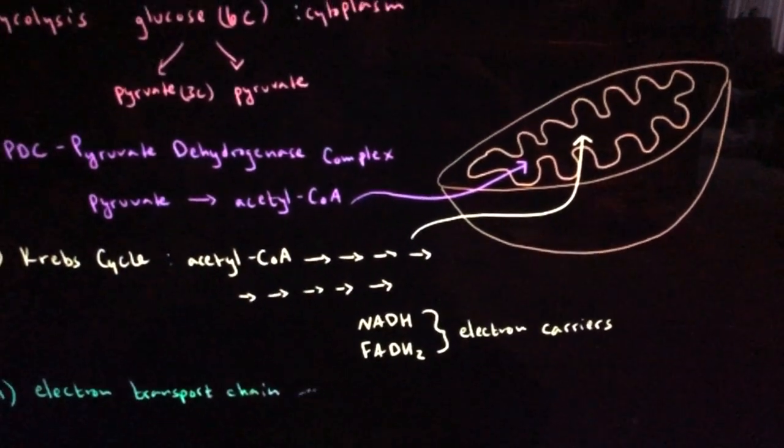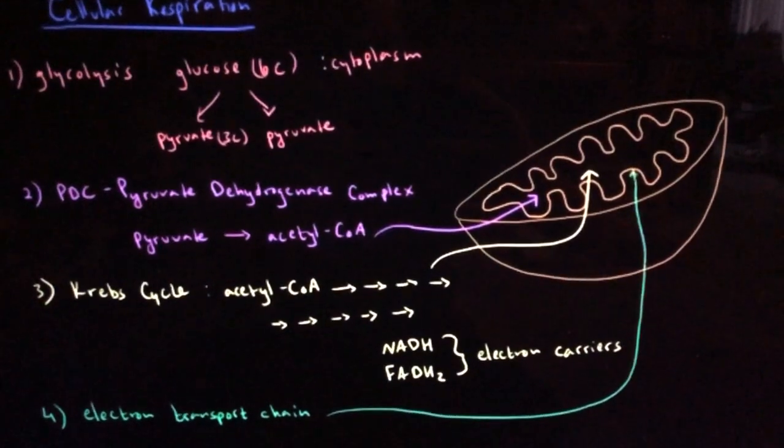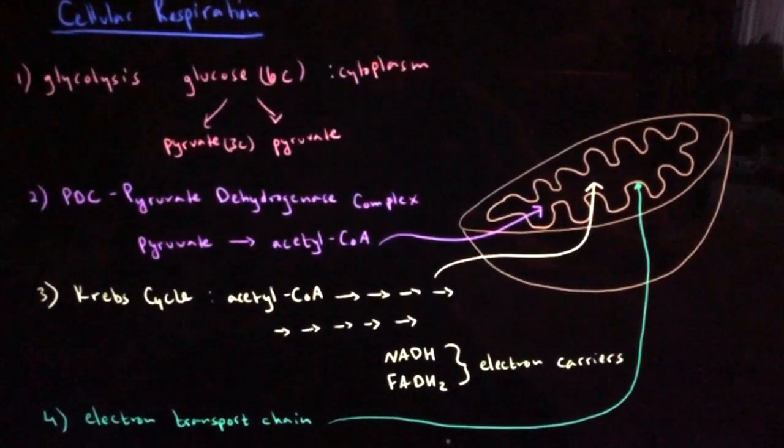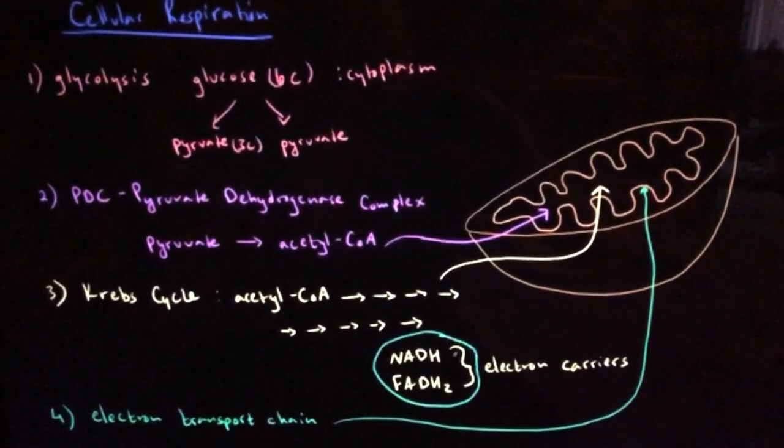The electron transport chain happens on the inner mitochondrial membrane, so on the membrane itself. And this is the part where we're actually going to make ATP with the help of these electron carriers that we made during the Krebs cycle.